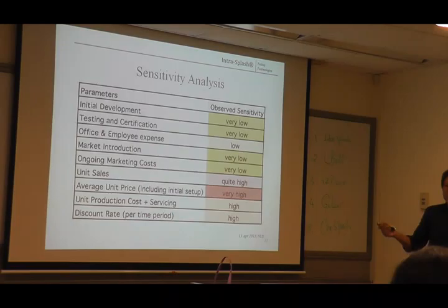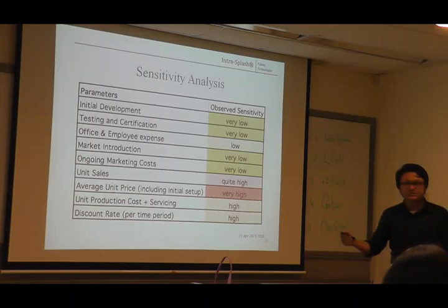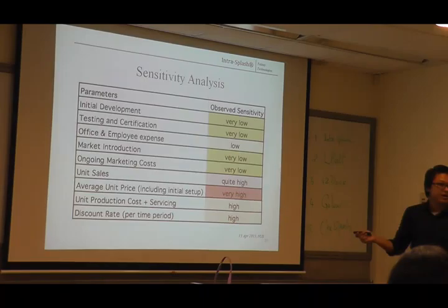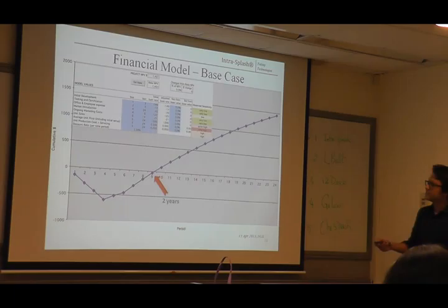This is the sensitivity of our whole business. Critical variables: unit price is very highly sensitive, followed by unit sales, present cost of servicing. Discount rate is unfortunately outside of our control, so we are focusing on the other factors. This is our base financial model — with this model we are making about $1.4 million after six years and our breakeven period is about two years.